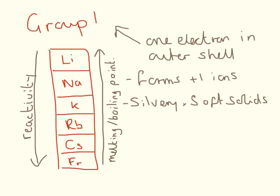The fact that they're in group 1 tells us there is one electron in that outer shell, and this also tells us they're going to form plus 1 ions. And they look like soft silvery solids.